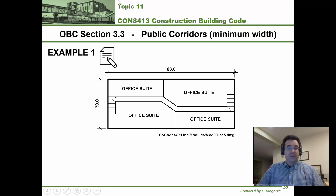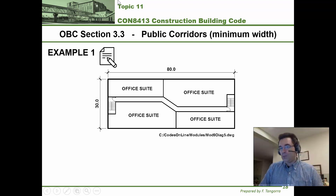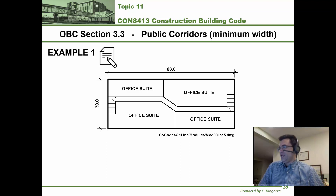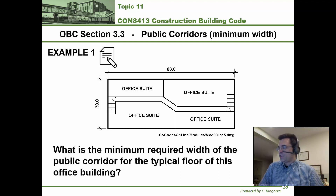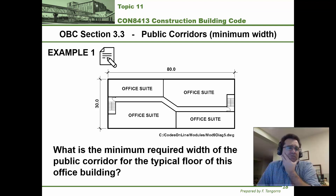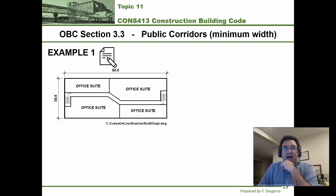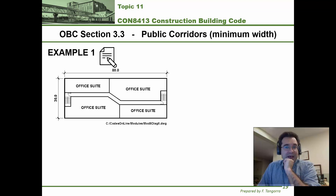Let's do some examples to practice using these two criteria for determining the minimum width of a public corridor serving as access to an exit. In example number one, we have a floor plan measuring 80 meters long by 30 meters wide — an office occupancy with four office suites. The question is: what is the minimum required width of the public corridor for this typical floor plan in an office building? I recommend starting by calculating the occupant load. Go back to the appropriate topic if you need a refresher.